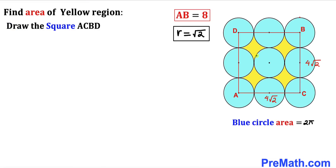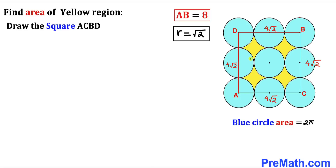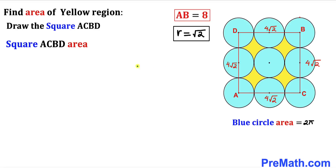I have drawn square ACBD by connecting centers A, C, B, and D. We know that side lengths AC and BC are 4√2, and since we are dealing with a square, all sides have the same length. Now let's go ahead and calculate the area of square ACBD.